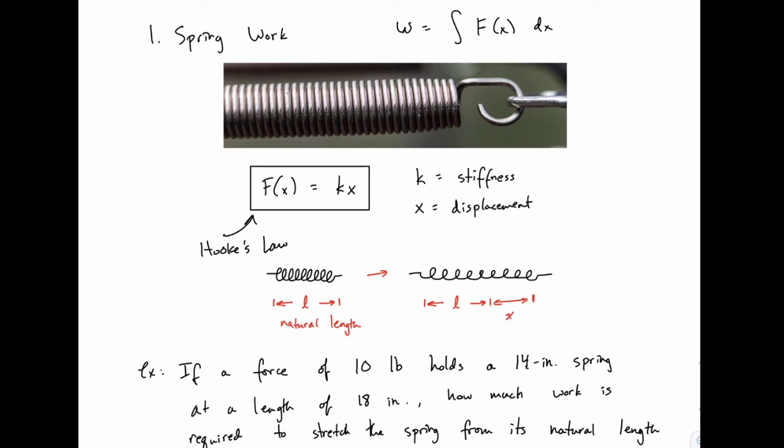And that constant of proportionality, that k, refers to the stiffness of the spring. Now this value k depends on several things. It depends on the material the spring is made out of, how thick the wire is that forms the spring.